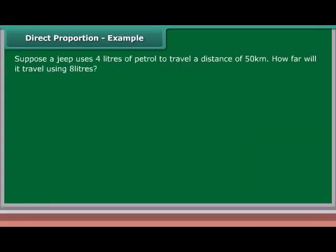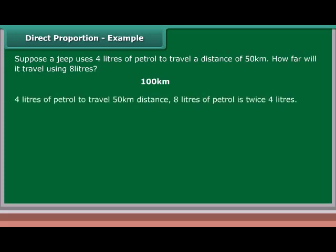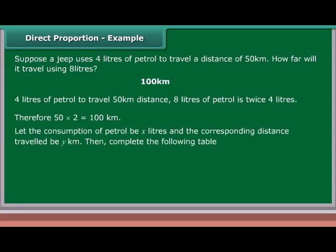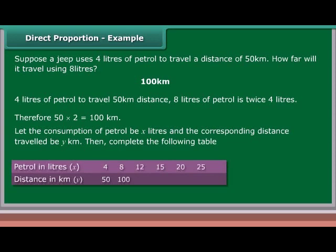Example: Suppose a jeep uses 4 liters of petrol to travel a distance of 50 kilometers. How far will it travel using 8 liters? The answer is 100 kilometers. Since 8 liters is twice 4 liters, 50 × 2 = 100 kilometers. Let the consumption of petrol be x liters and the corresponding distance traveled be y kilometers, then complete the following table.